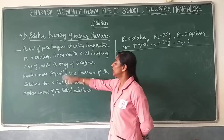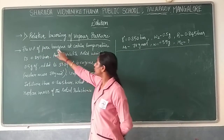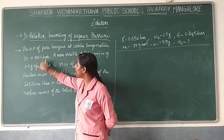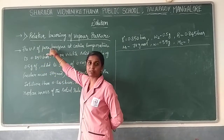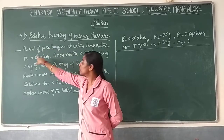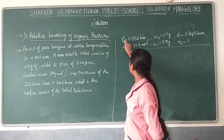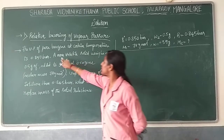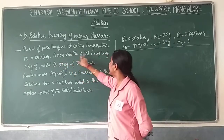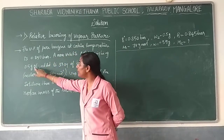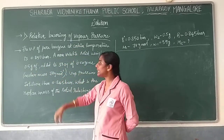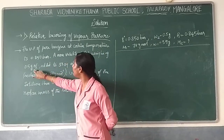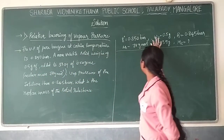The next problem: the vapor pressure of pure benzene at a certain temperature is 0.850. A non-volatile solid of 0.5 grams is added.